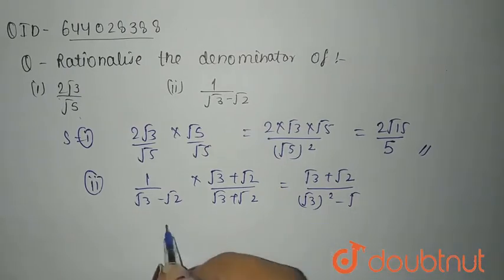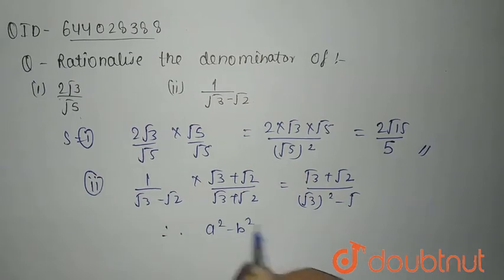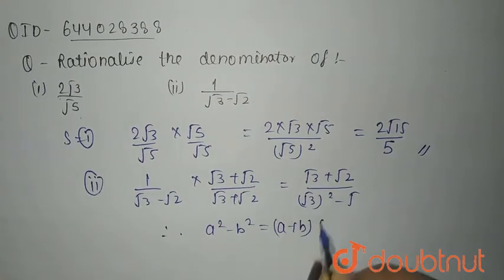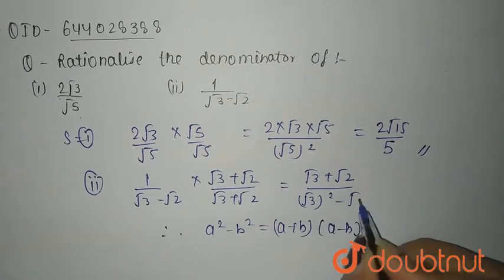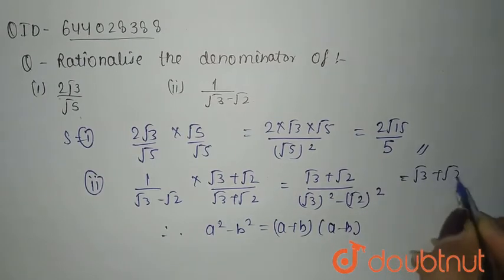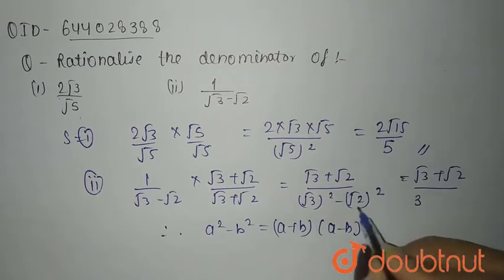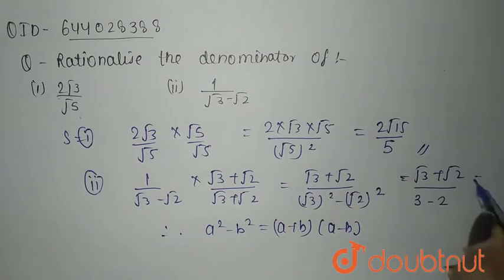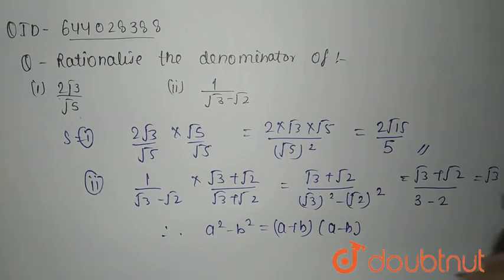This becomes (√3)² - (√2)², which comes out to be √3 + √2 in the numerator. √3 squared is 3 and √2 squared is 2, so it's left with 1. So the answer is √3 + √2.